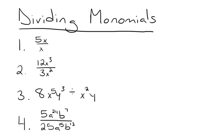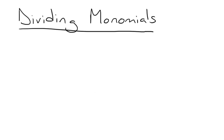Hello, and welcome to this video on dividing monomials. A monomial is a mathematical expression that has only one term. So 4x, xy cubed, and 23a to the 4th are all examples of monomials.